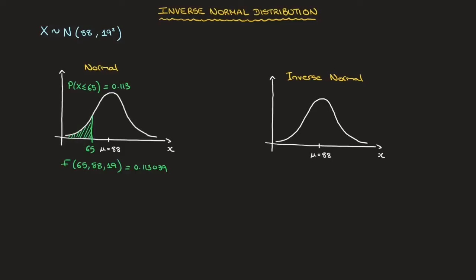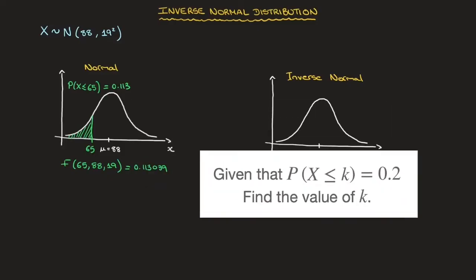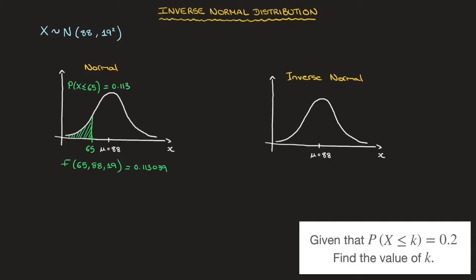On the other hand, we'll use the inverse normal distribution function to calculate values of X given a probability — in other words, given an area under the curve. For example, we may be told that the probability that X be smaller than K is 0.2, and we'd be asked to find K.